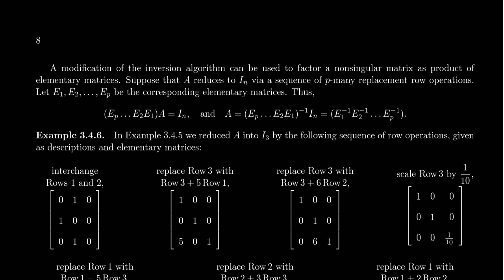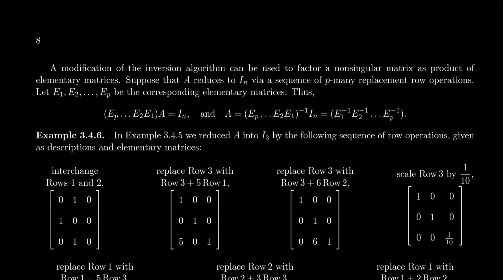In the previous video, we learned about the inversion algorithm, which is a process we can use to compute the inverse of a non-singular matrix. The algorithm came from the following idea: if we take a matrix and reduce it to the identity matrix, that same sequence of elementary row operations that converts A into the identity will convert the identity into A inverse.